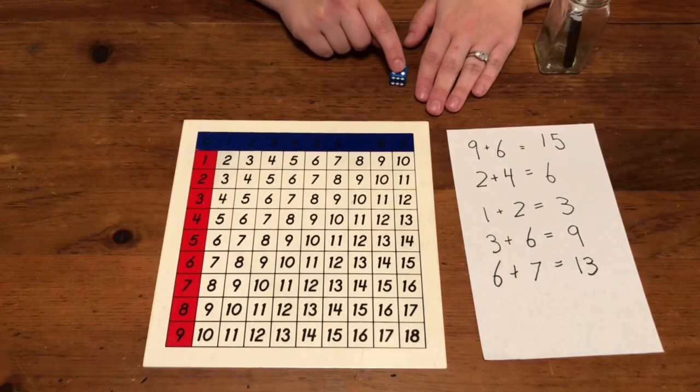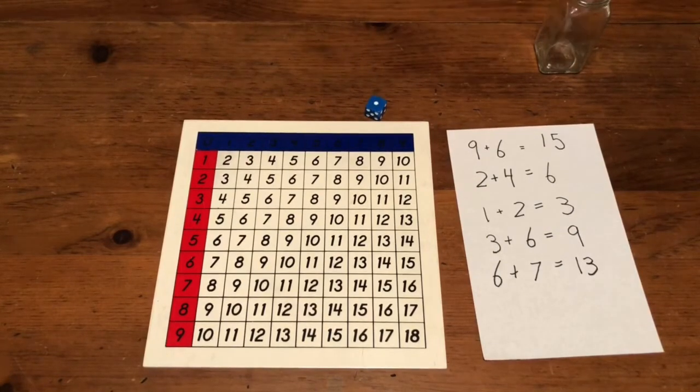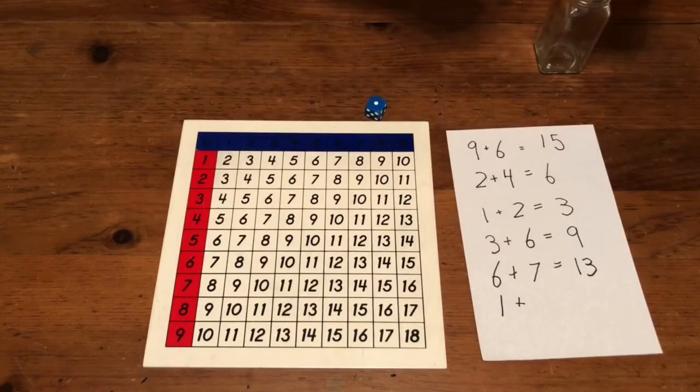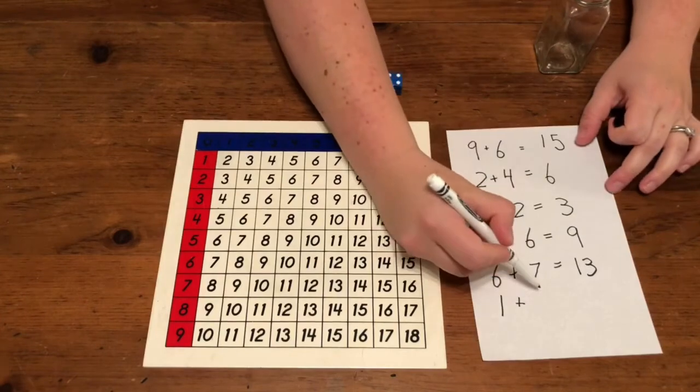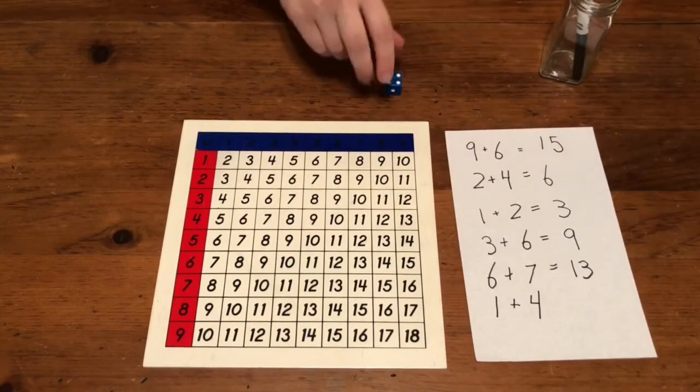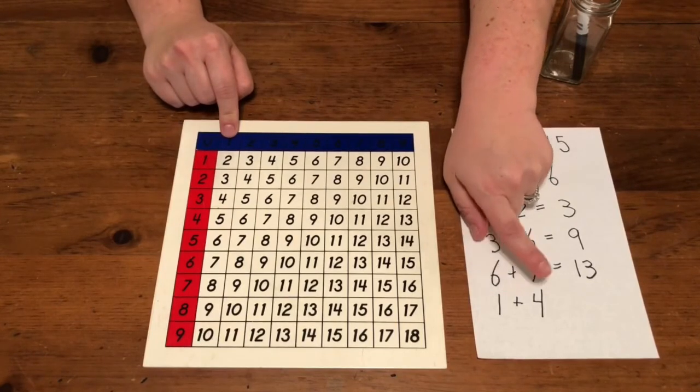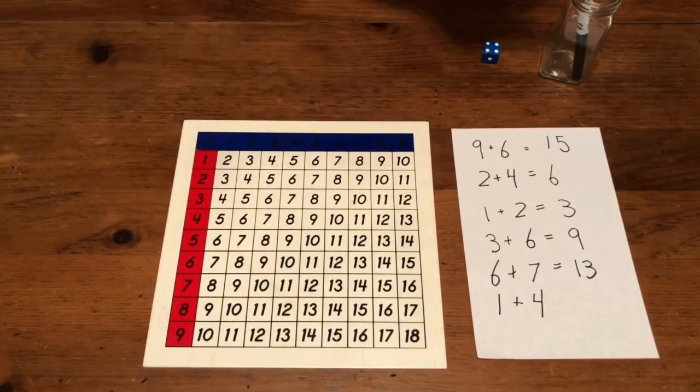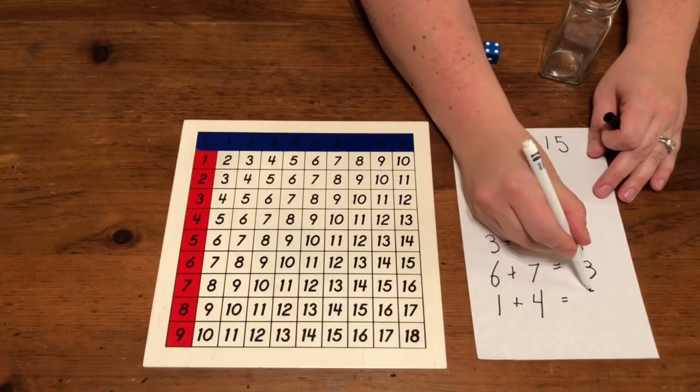We can also use a dice. So I'll roll my dice. One. I'll write that down. One plus four. One plus four is five. One plus four equals five.